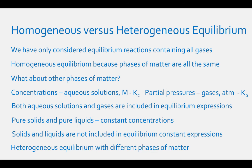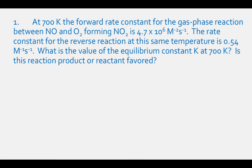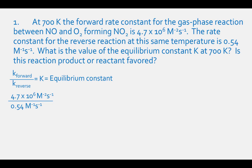Now we will work on problems using the concepts discussed in this video. Problem 1: At 700 Kelvin, the forward rate constant for the gas phase reaction between NO and O2 forming NO2 is 4.7 × 10⁶ M⁻² s⁻¹. The rate constant for the reverse reaction is 0.54 M⁻¹ s⁻¹. The equilibrium constant K equals the forward rate constant divided by the reverse rate constant: 4.7 × 10⁶ divided by 0.54, which equals 8.7 × 10⁶.